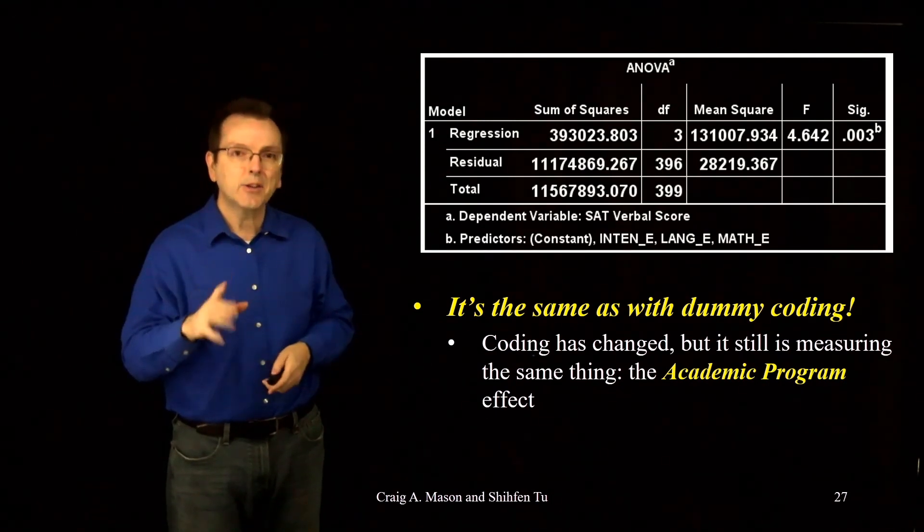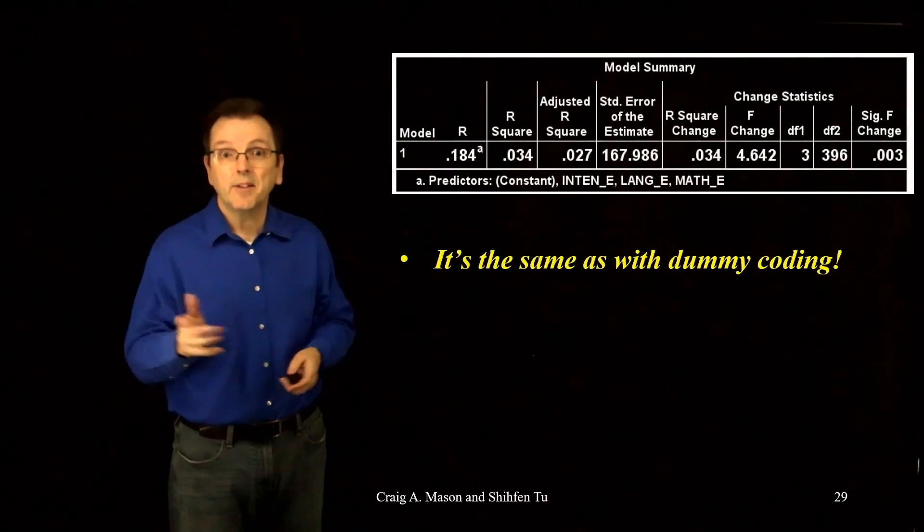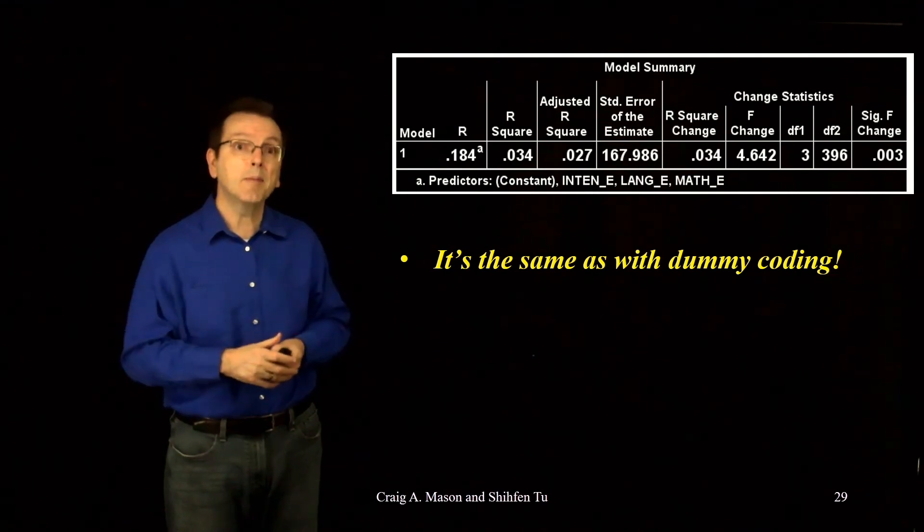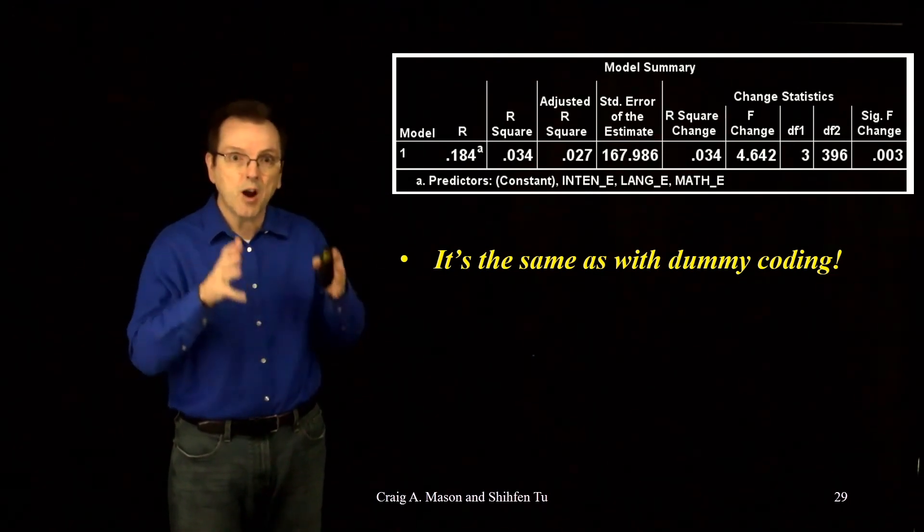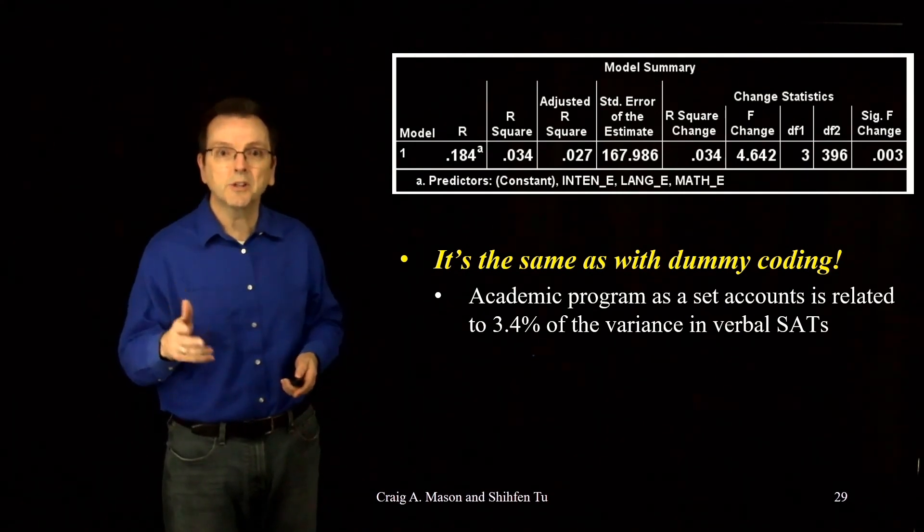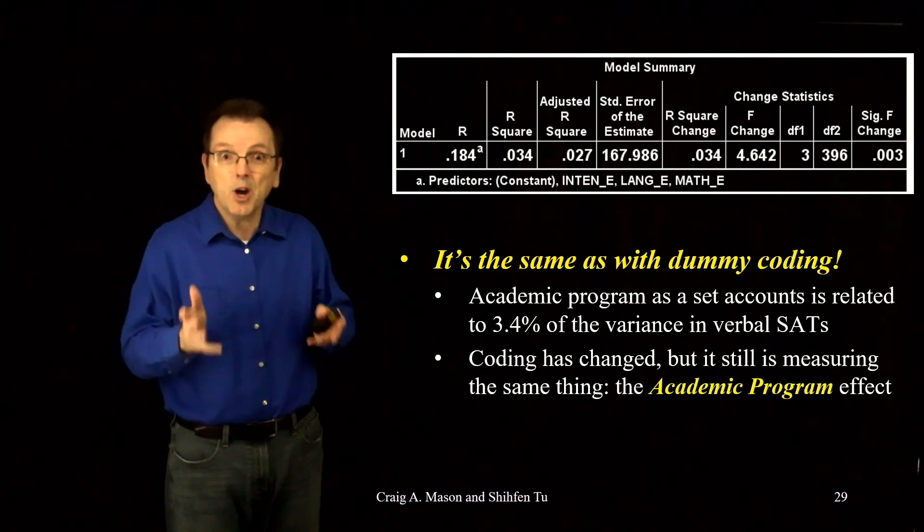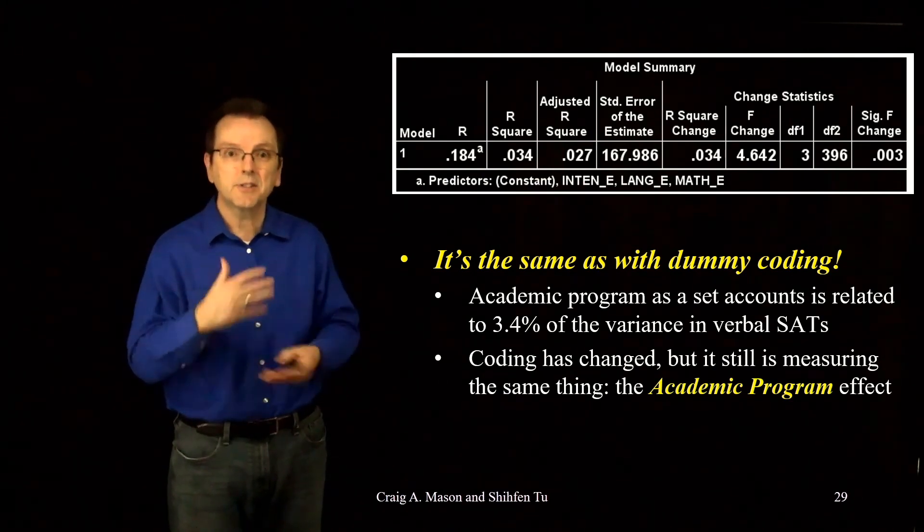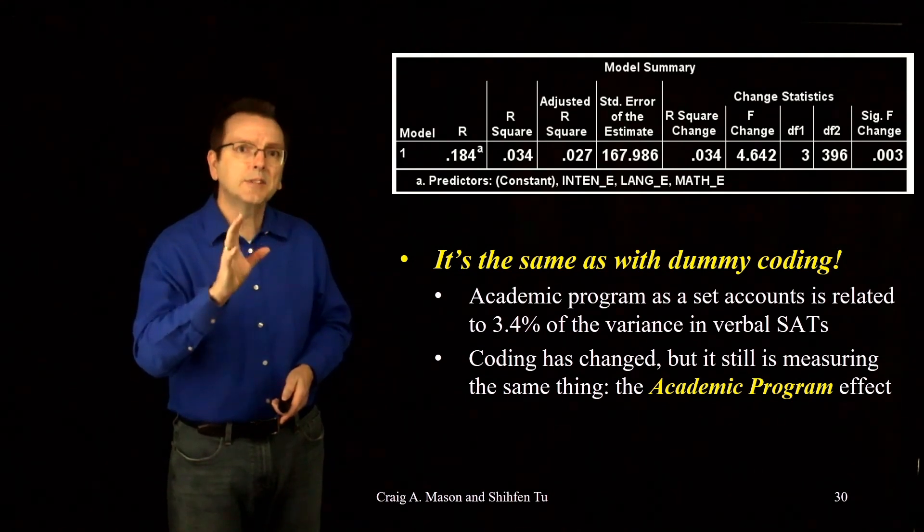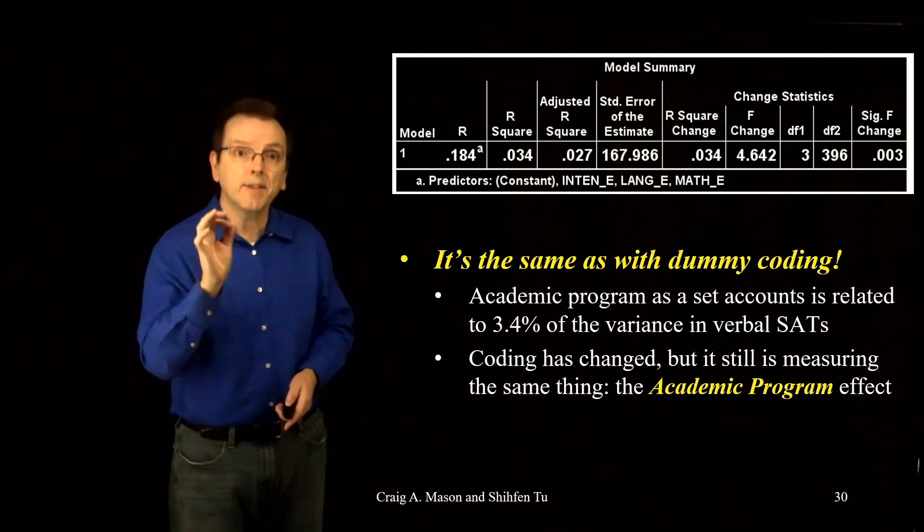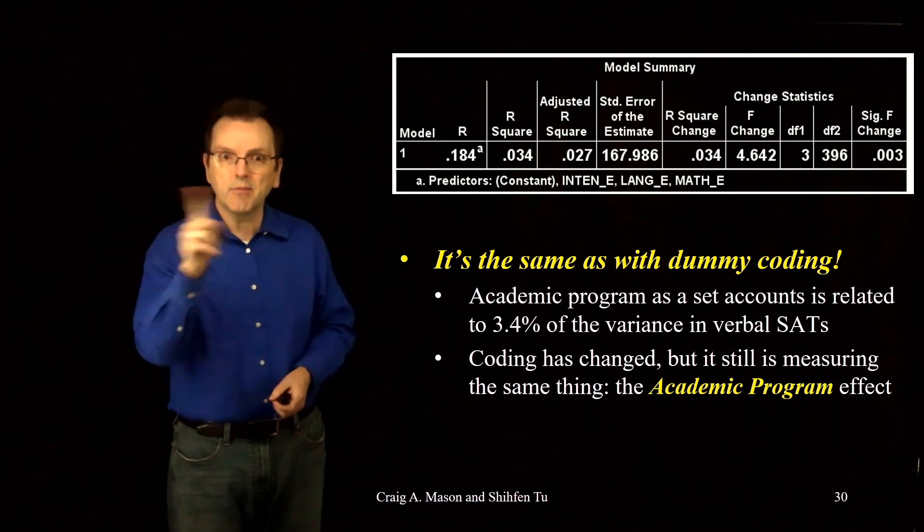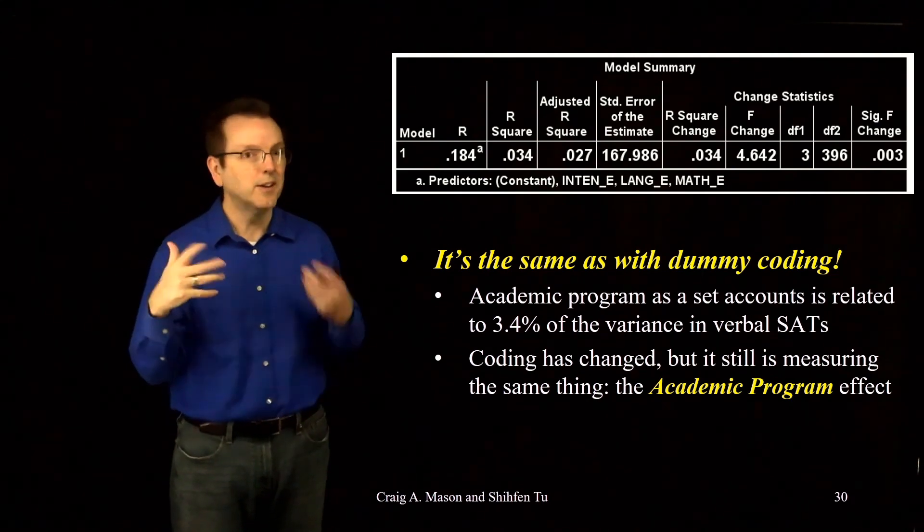Given that, you may be less surprised now to also find out that it accounts for exactly the same amount of variance. Our R squared is exactly the same as it was when we did dummy coding. The set of three effect codes, our academic program effect, accounts for 3.4% of the variance in verbal SAT scores. Again, because it's still this same construct, academic program, just recoded in a different sort of way. So effect coding gives us the same results for the overall effect of academic program. This illustrates that it's still the same thing of academic program, even though we've switched from dummy coding to effect coding.